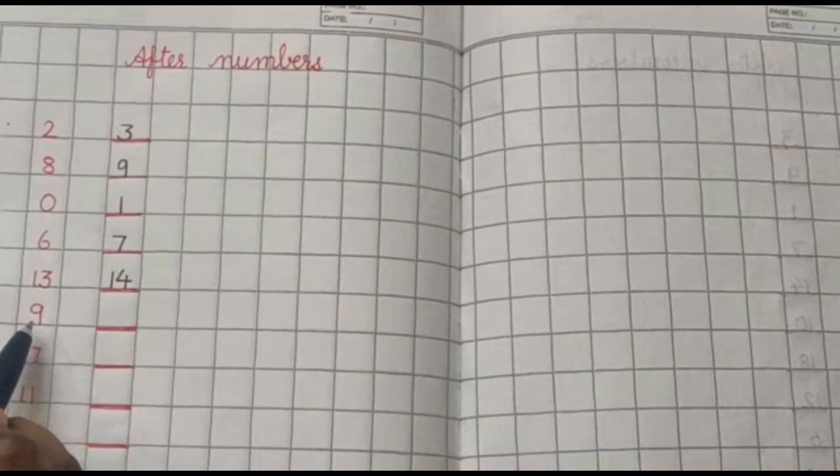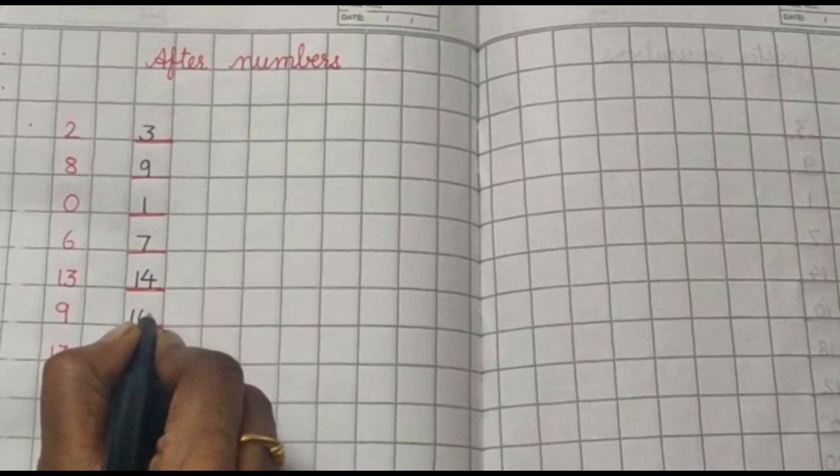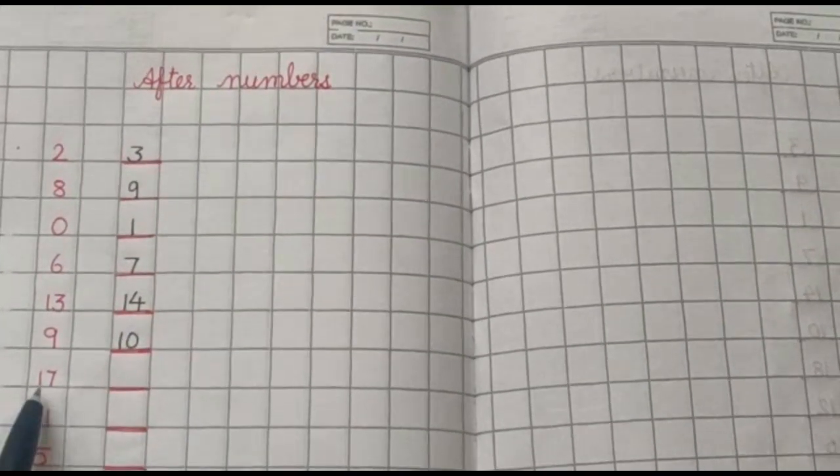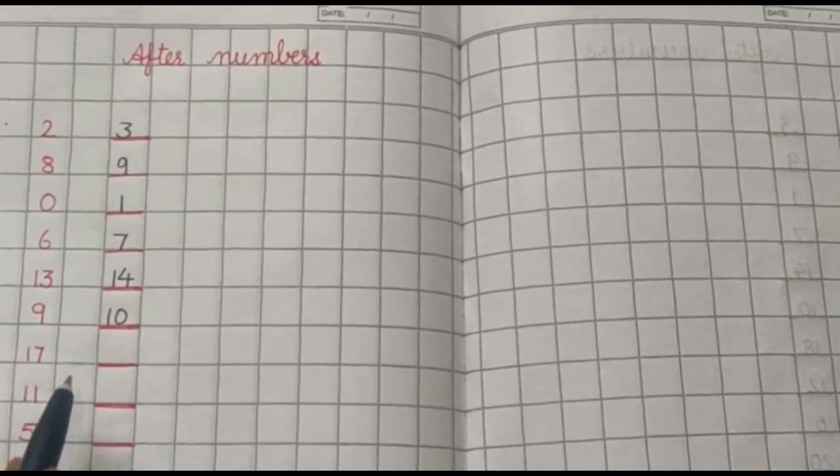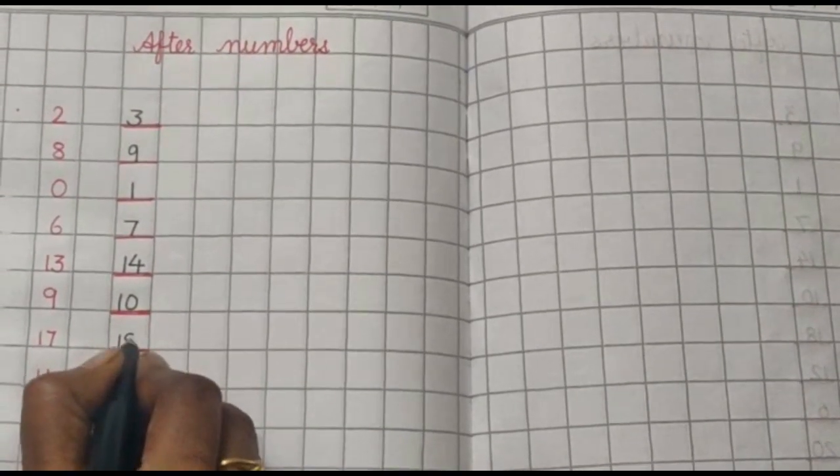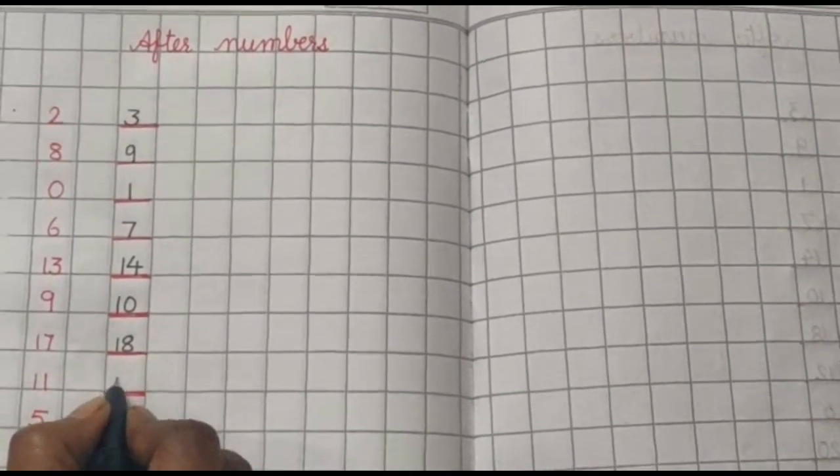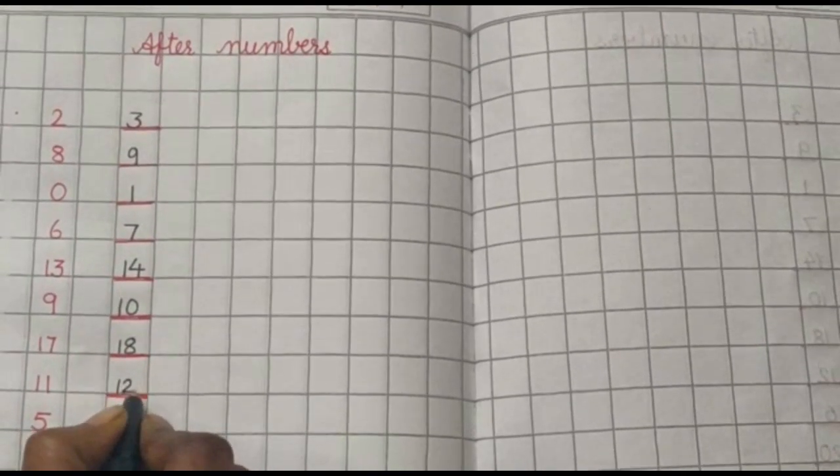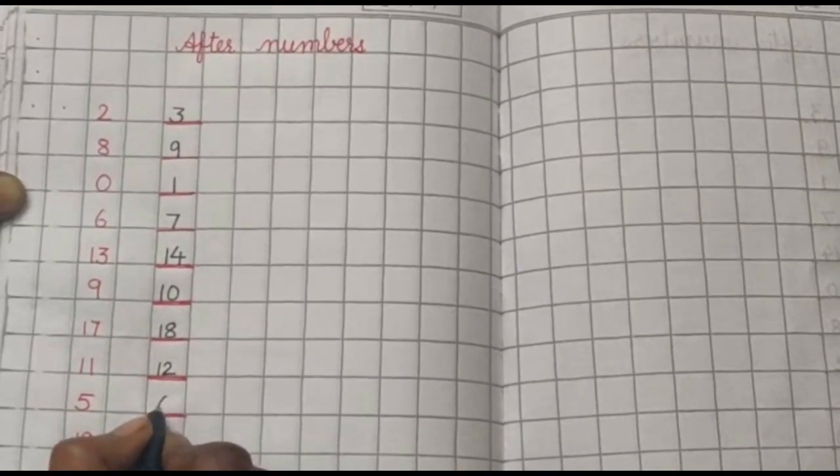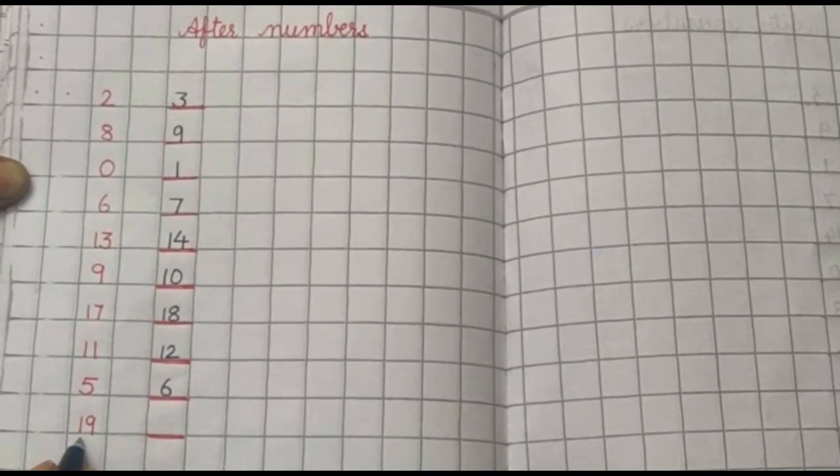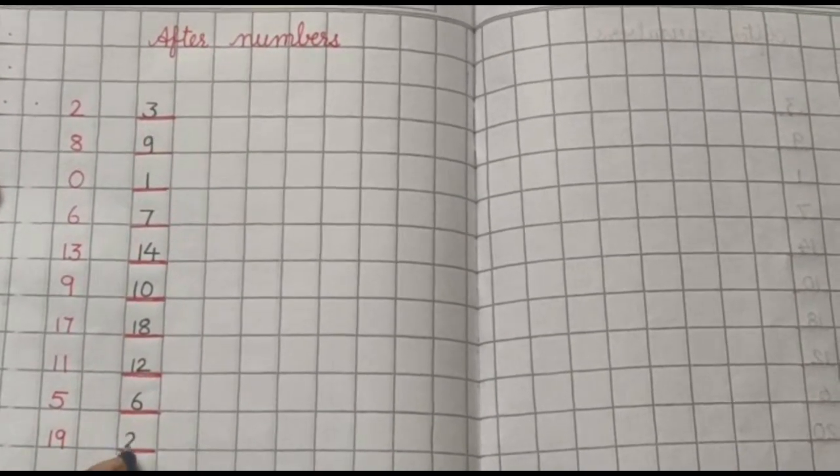Nine. After nine, ten. Seventeen. What will come after seventeen? Eighteen. Superb. Eleven. After eleven, twelve. Five. After five, six. Nineteen. What will come after nineteen? Twenty.